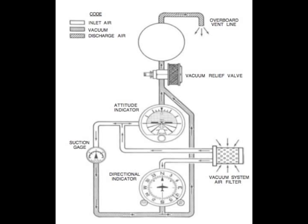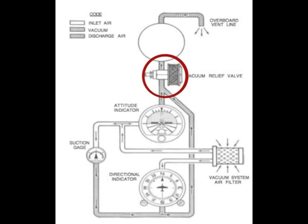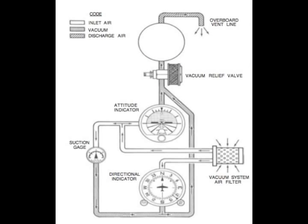Now we ask ourselves, well what's in place to protect our system in case anything should happen to it? We have a vacuum relief valve and an air filter for that. The relief valve, as the name suggests, is in place to get rid of any excessive pressure that might build up in the lines, for example if the pump is just working way too hard for its own good.